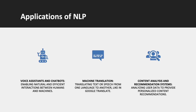Voice assistants and chatbots represent a significant advancement in NLP, enabling more natural and efficient interactions between humans and machines. These technologies use NLP to understand and interpret human speech or text inputs, allowing them to respond in a way that mimics human conversation. Voice assistants, found in devices like smartphones and smart speakers, can perform tasks, answer questions, and control smart home devices through voice commands. Chatbots, often used in customer service and online support, interact with users via text, providing assistance, information, and even engaging in casual conversation. The advancement in NLP has made these tools more intuitive, responsive, and capable of handling a wide range of user requests with increasing accuracy.